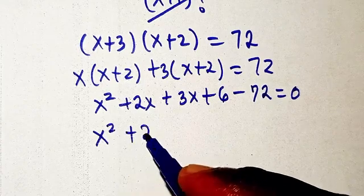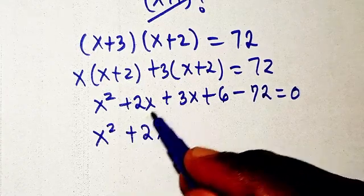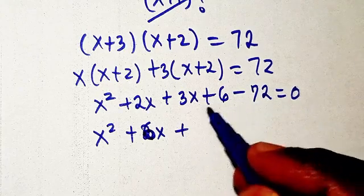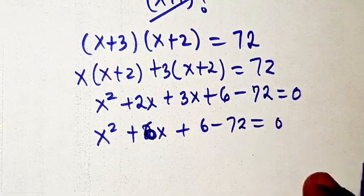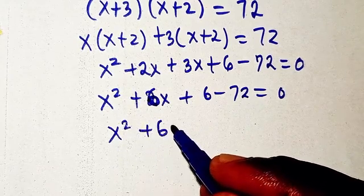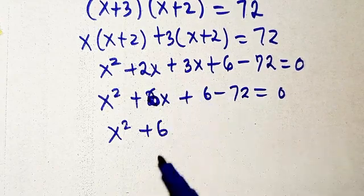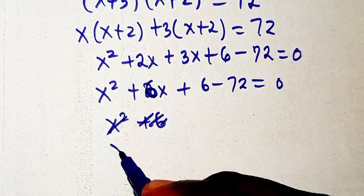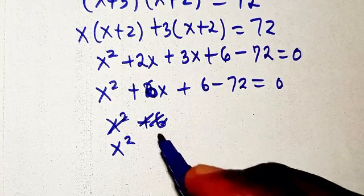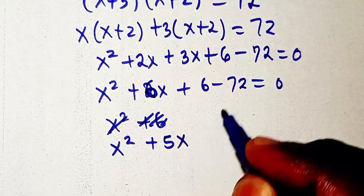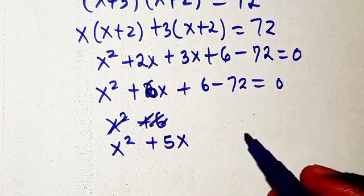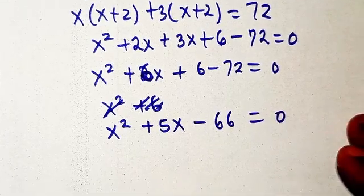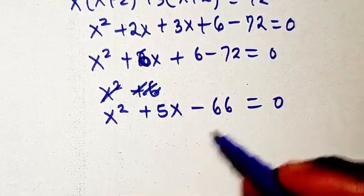So we have x squared plus 2x plus 3x — that gives us 5x — then plus 6 minus 72, which gives us minus 66, equals zero. I'm sorry for that earlier mistake — 2x plus 3x gives 5x, not 6x. So our equation is x squared plus 5x minus 66 equals zero.